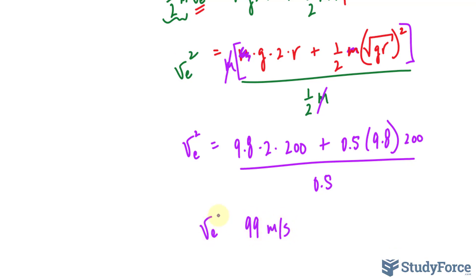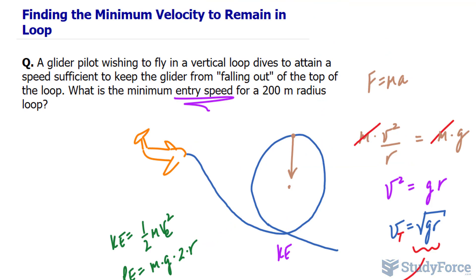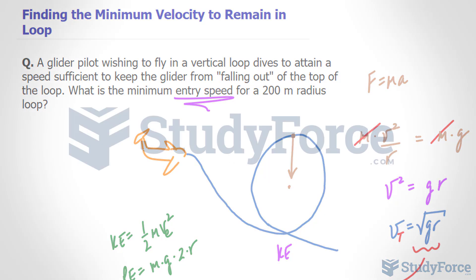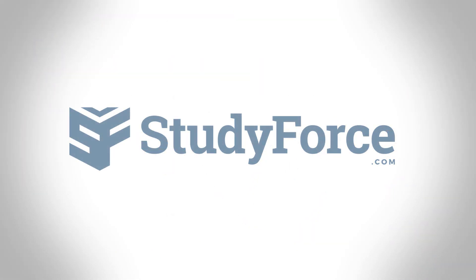is the entry speed for this glider plane to remain in loop all throughout. And there you have it. That is how to combine centripetal force and energy related problems to find the minimum velocity to remain in loop.